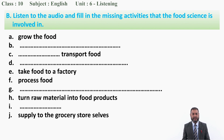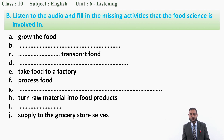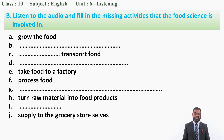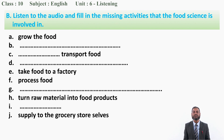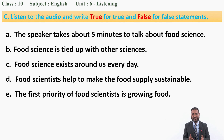After 'grow the food,' you fill in the missing activity for B. For C, write down the missing activity. Then 'transport food,' another missing activity for E: 'take food to a factory,' F: 'process food,' G is missing, H: 'turn raw material into food products,' I is missing, and finally 'supply to the grocery store sales.'